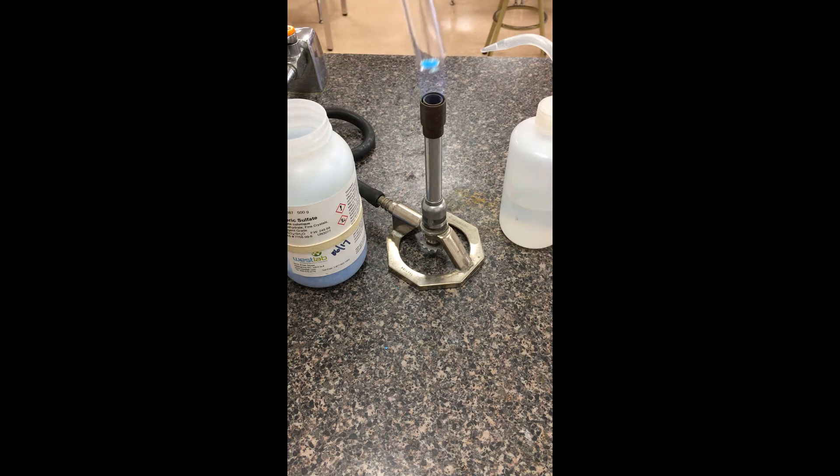And again, what we're trying to look for is what's happening to that blue powder as the heat evaporates off some of the water. I have this Bunsen burner on the blue flame setting. So that's going to be the hotter flame.